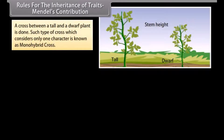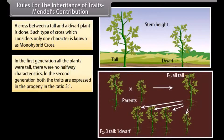A cross between a tall and a dwarf plant is done. Such a cross which considers only one character is known as a monohybrid cross. In the first generation, all the plants were tall with no halfway characteristics. In the second generation, both traits are expressed in the progeny in the ratio 3:1.